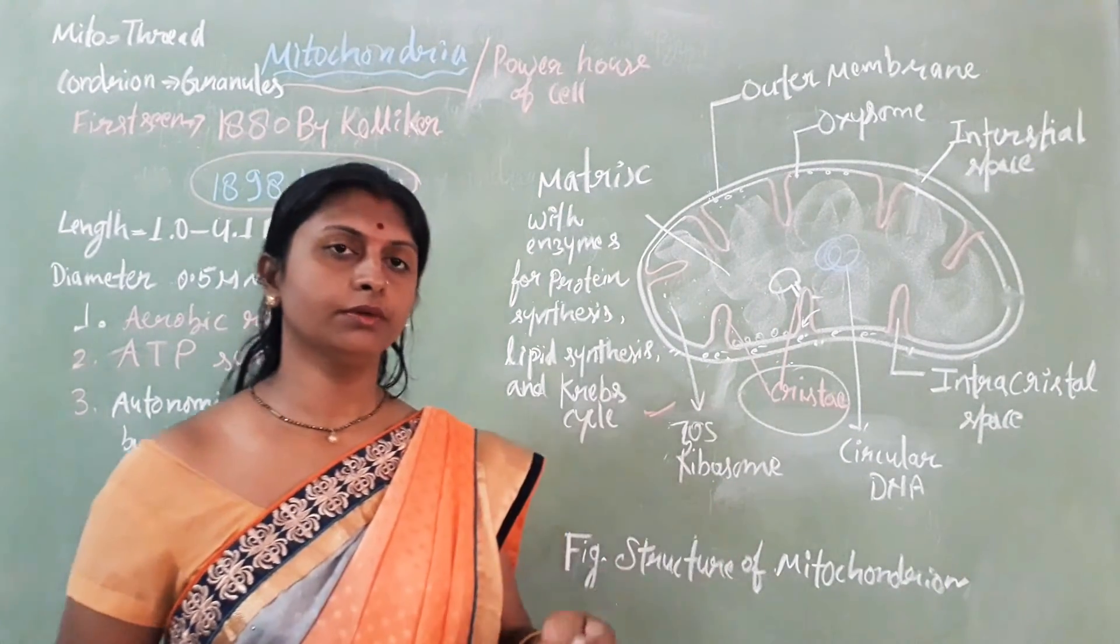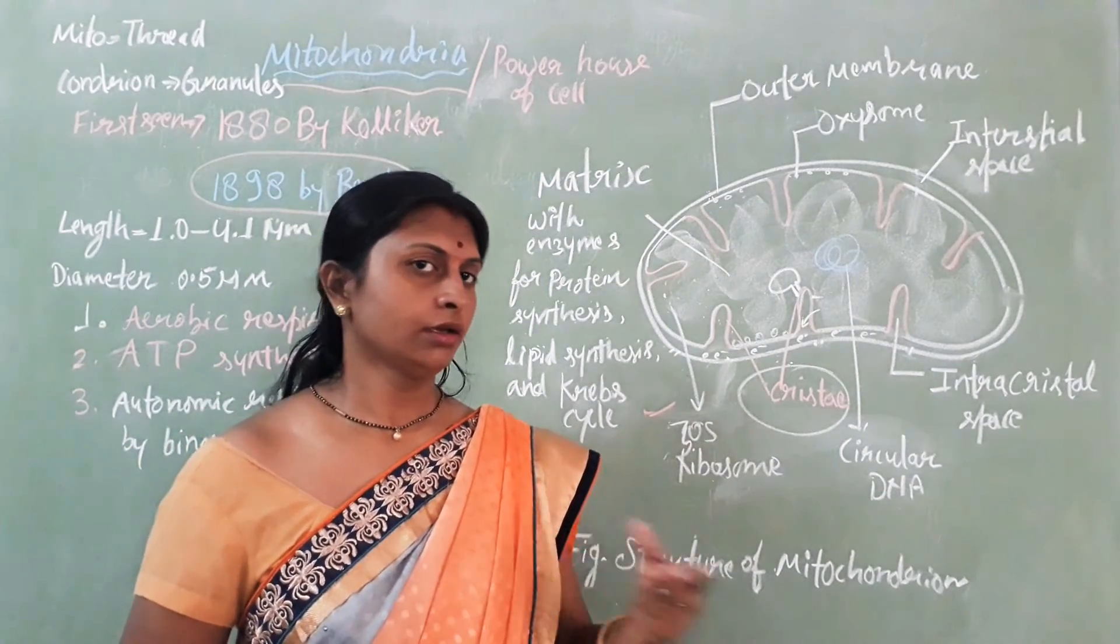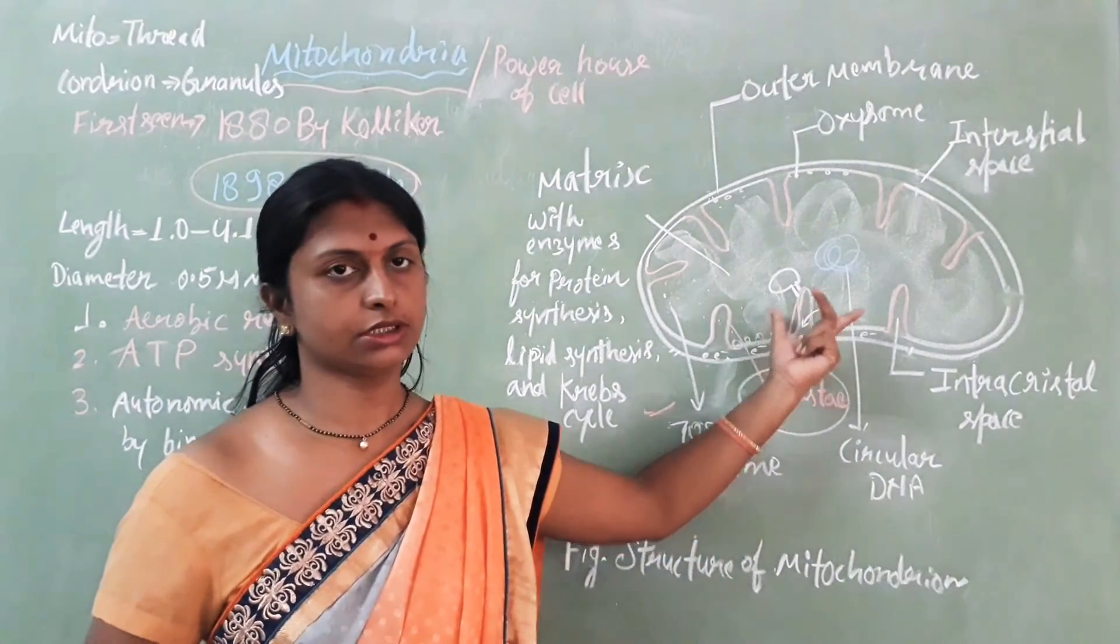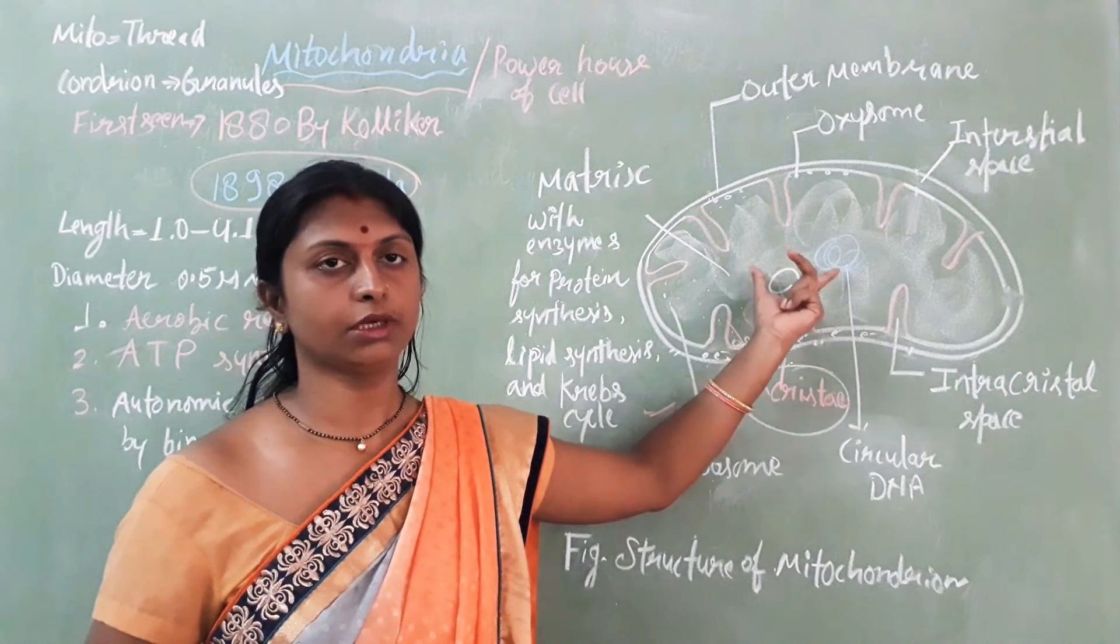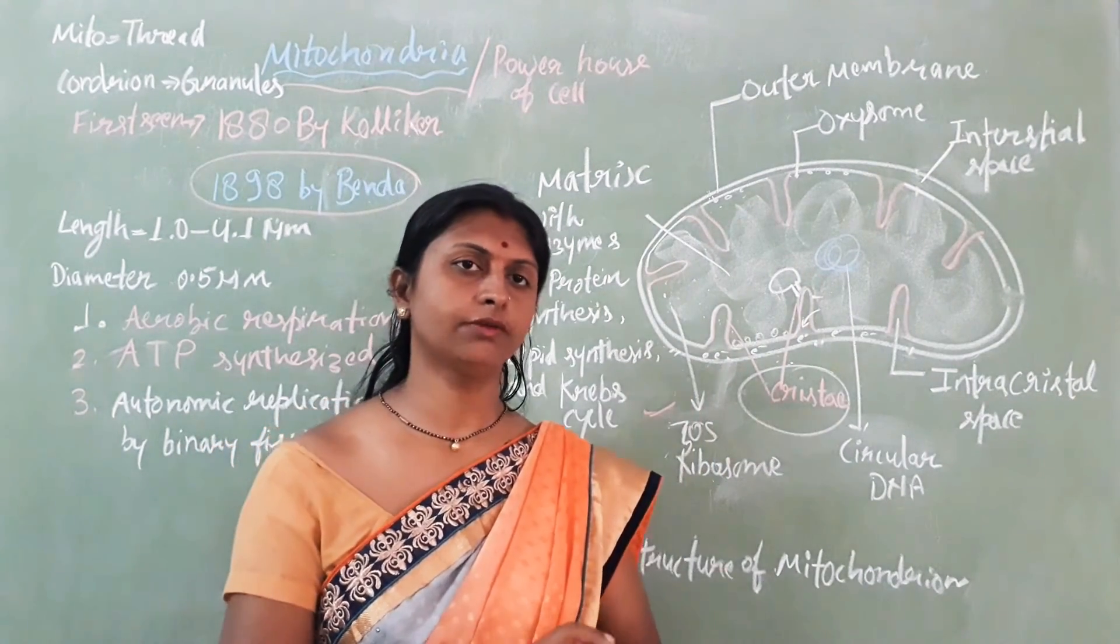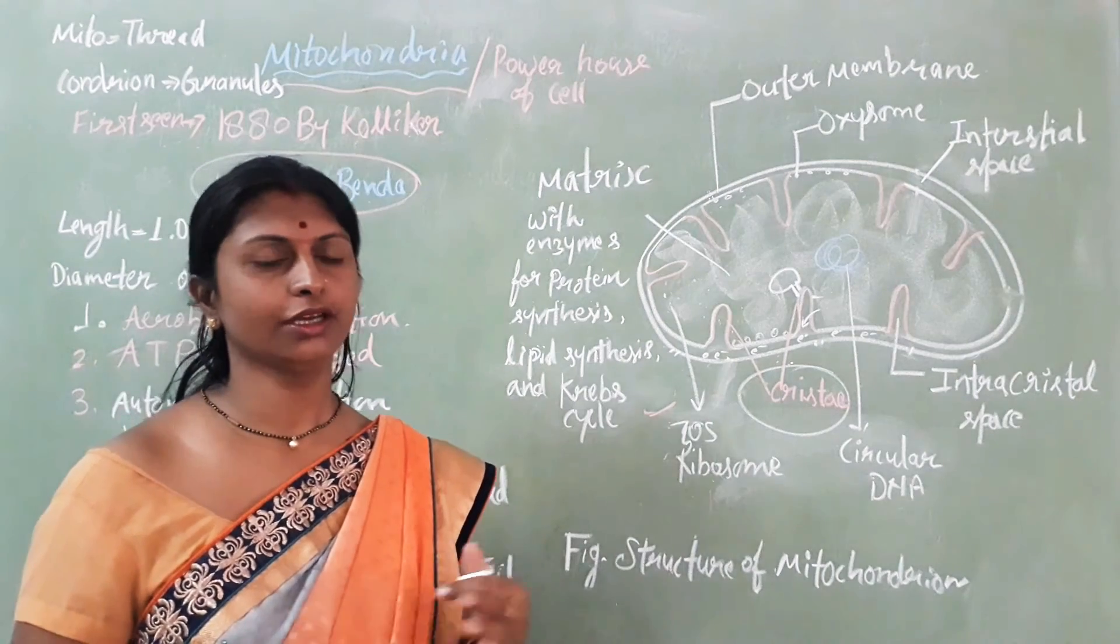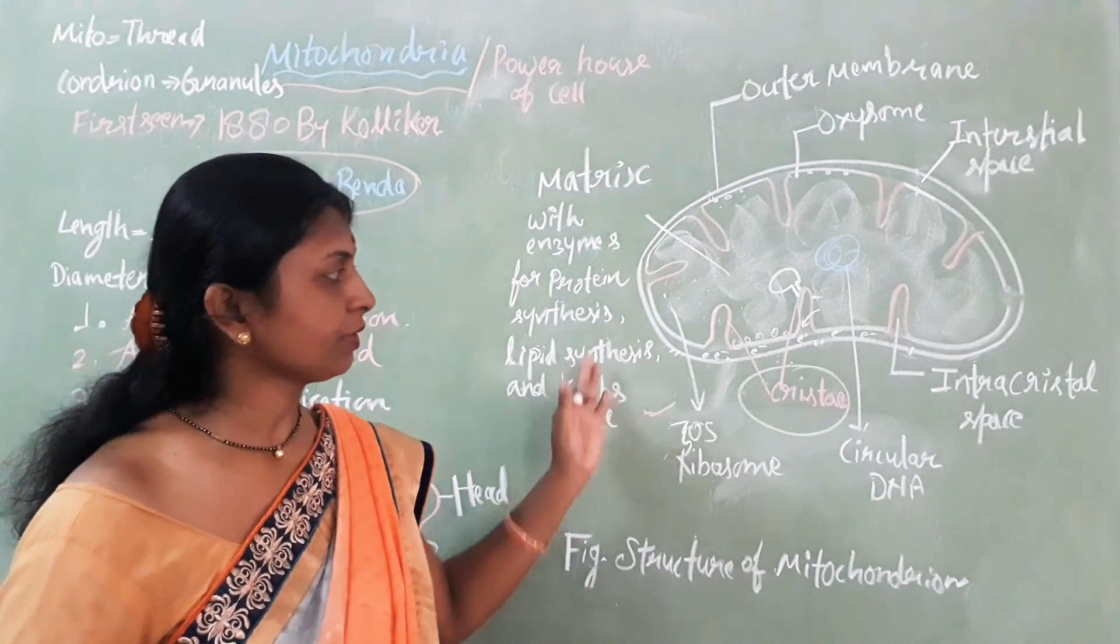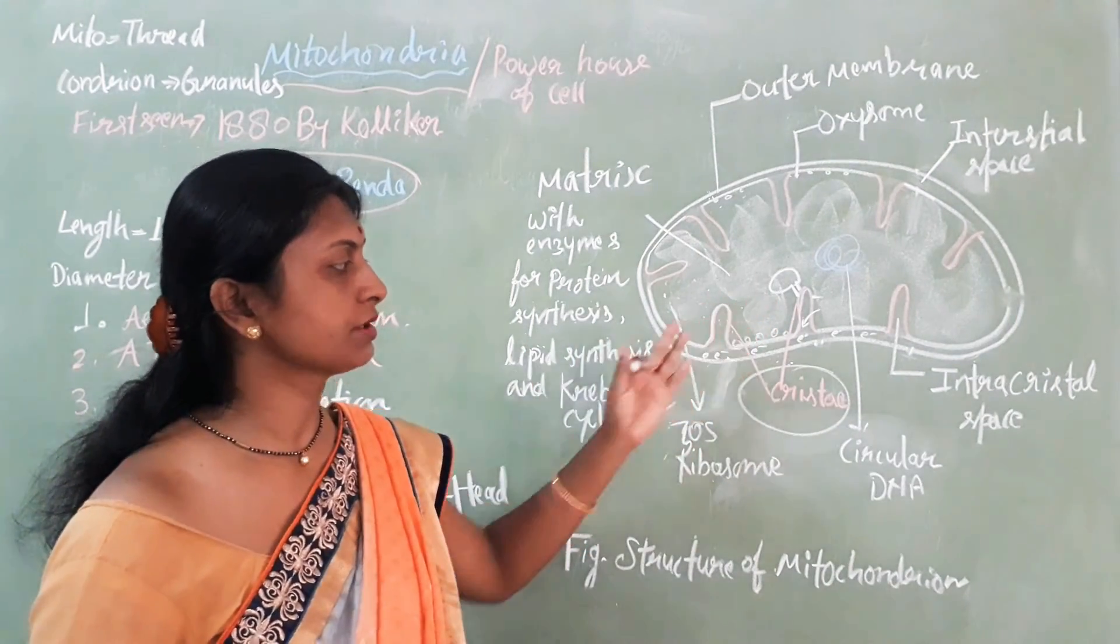In human anatomy, liver cells contain approximately 25,000 mitochondria because of the biochemical functions. Sperm cells contain 25 mitochondria. In particular cells, based on function, their number varies.